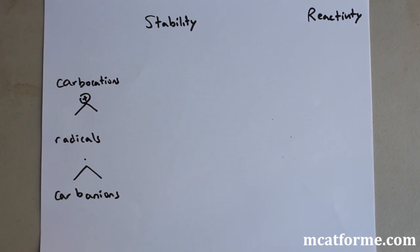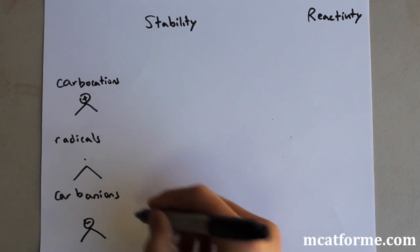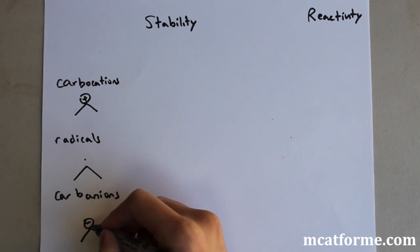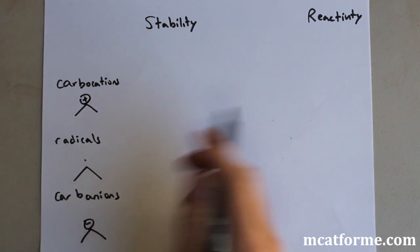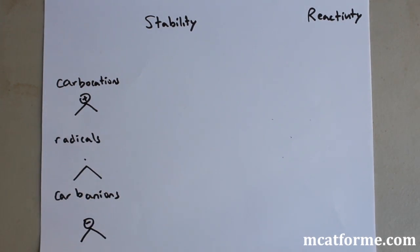A carbanion is when it loses its atom but doesn't lose its electrons. For example, if this was an H here, the H would leave but the electrons would go back onto that carbon molecule. So that's the carbanion.